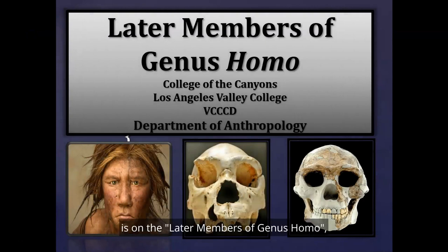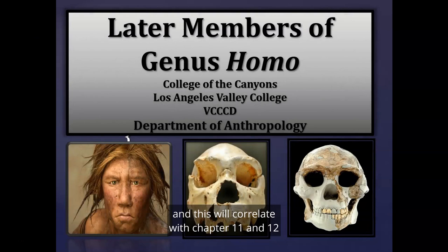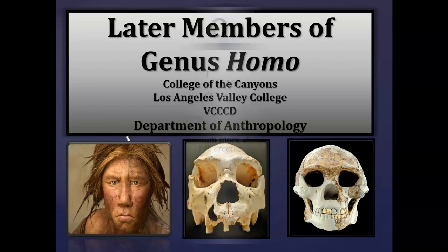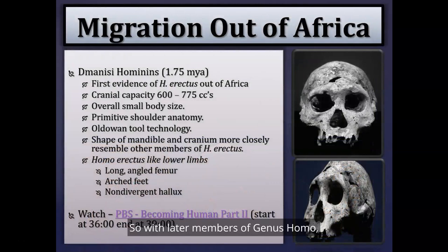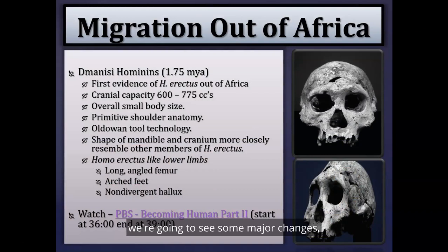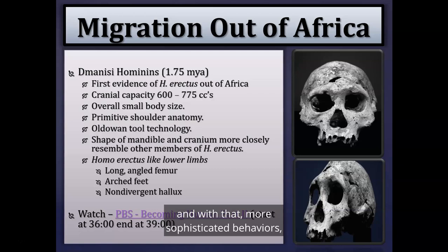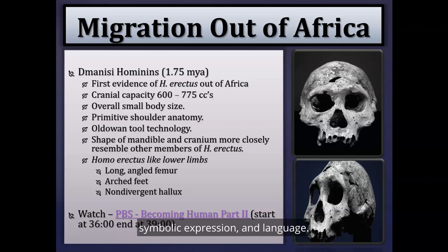This PowerPoint presentation is on the later members of genus Homo, correlating with chapters 11 and 12 in the Explorations textbook and chapters 15 and 16 in the lab manual. With later members of genus Homo — essentially Homo erectus and onward — we're going to see major changes: migration out of Africa, more sophisticated stone tool technologies, expansion in cranial capacity, and more sophisticated behaviors such as control of fire, persistence hunting, symbolic expression, and language.